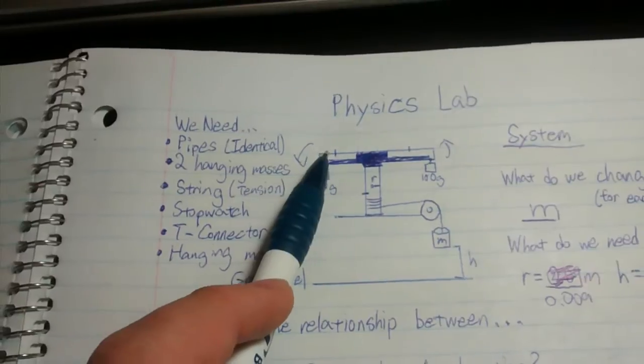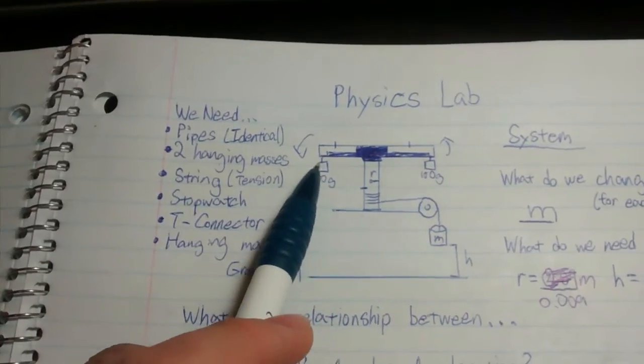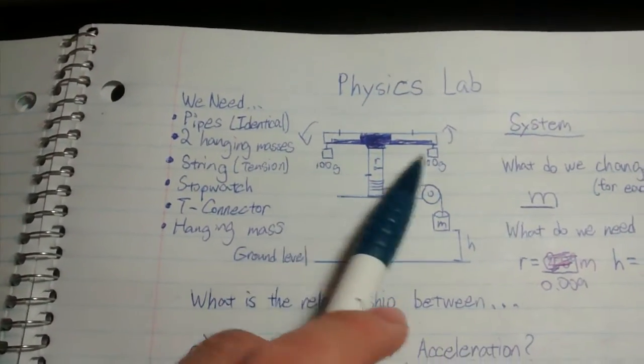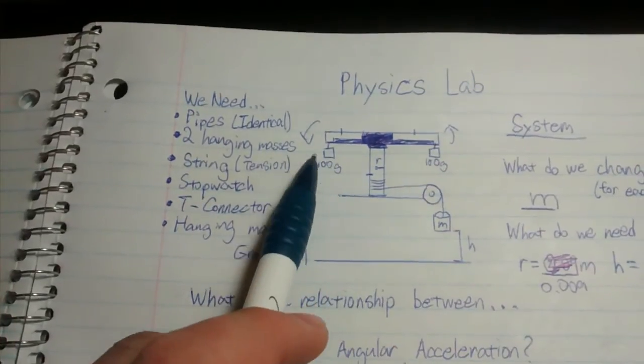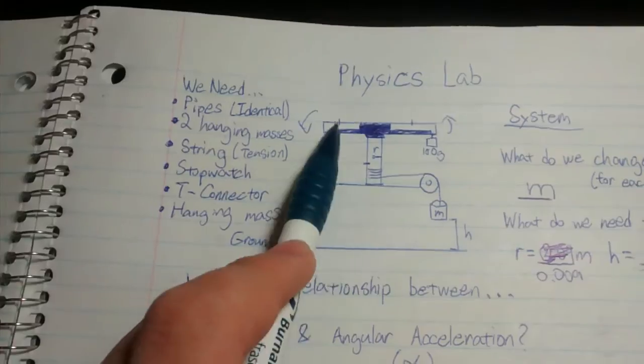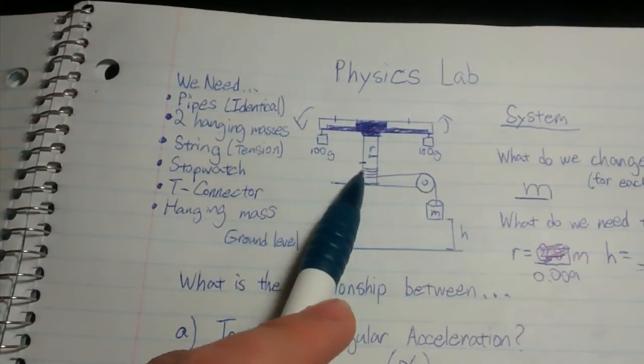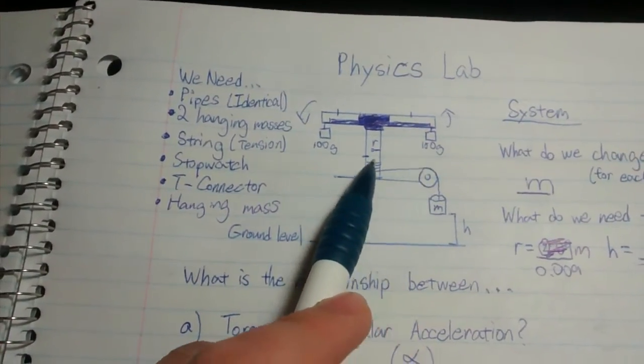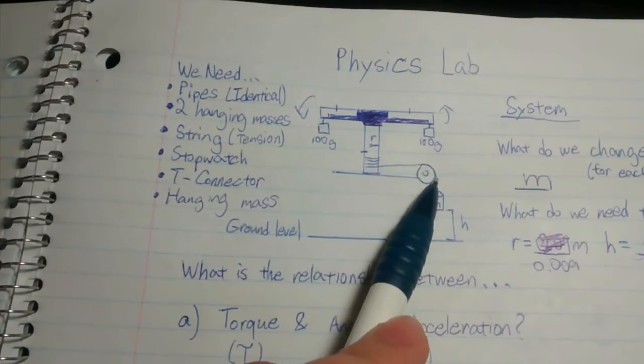The system is made of three identical pipes with two hanging masses. Do not change the masses, otherwise it will change the system. We decided on 400 grams each, and you have a T-connector connecting all three pipes and some string which creates tension force.